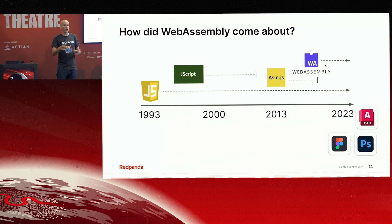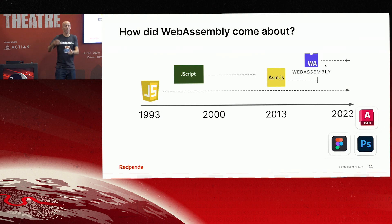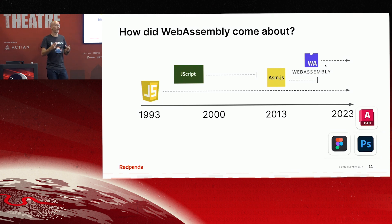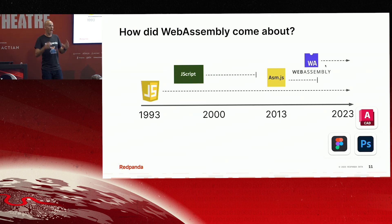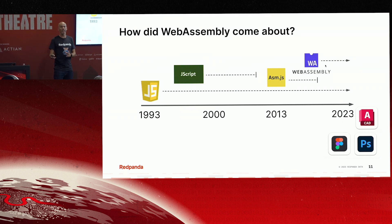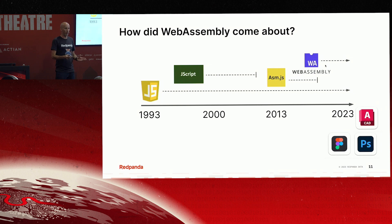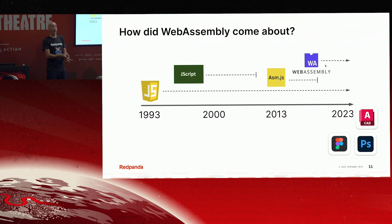WebAssembly came about as the evolution of JavaScript in the browser — about ten years ago Mozilla came up with ASM.js, Assembly JavaScript, essentially running an assembly language in JavaScript in your browser. The evolution of that, coming out of the W3C, is WebAssembly — the idea that you can run assembly code natively within some sort of execution engine. The power is amazing: AutoCAD and Photoshop, two heavyweight legacy C and C++ applications that have been running on desktops for years, have been recompiled to run in WebAssembly in a browser. That is the power of WebAssembly.